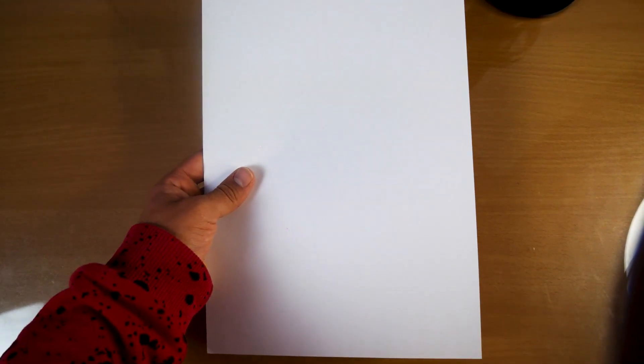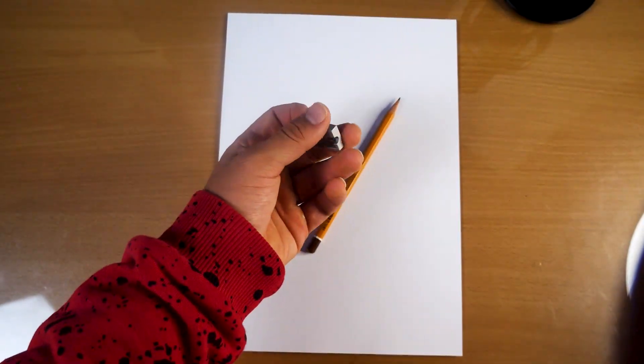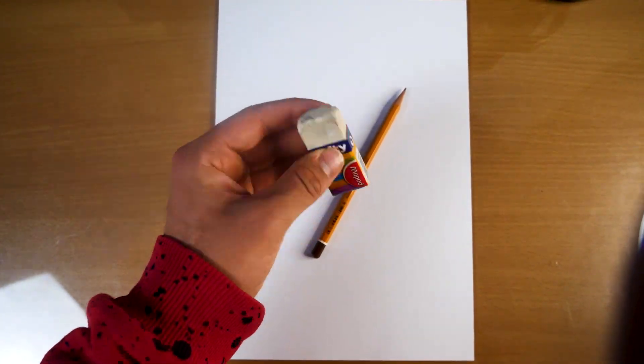I bought this paper for $0.45, this pencil for $0.15, this sharpener for $0.20, and this eraser for $0.20, which adds up to exactly $1.